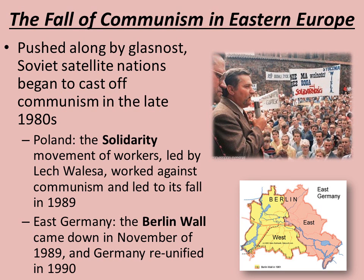Glasnost leads to Soviet satellite nations in Eastern Europe beginning to criticize the Soviet government more and more, and you begin to see more movement against being ruled by the Soviets. A lot of those satellite countries eventually, by the end of the 1980s, will have cast off communism. One example would be in Poland, where there was a movement of shipping yard workers led by a guy named Lech Walesa, who you see in the picture there, speaking to a Solidarity rally in the 1980s. Through the influence of Solidarity and getting people behind the movement to oppose communism, communism fell in Poland in 1989, and then in 1990, Lech Walesa was actually elected president of Poland.